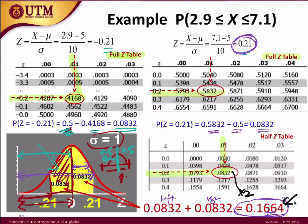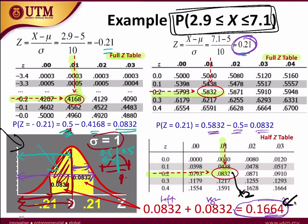It is very important to draw the graph first before calculating. The graph will not be given in the exam — you must draw it yourself so you know which area of the probability curve you need to calculate. The steps are: draw the graph first, then calculate the Z value, then refer to the table — either full table or half table.